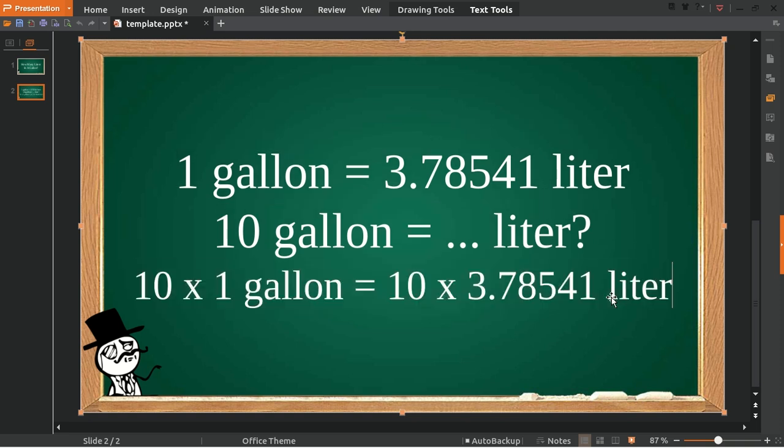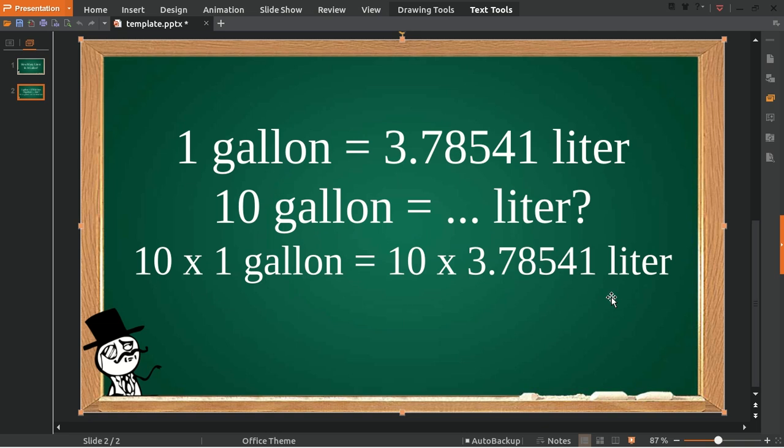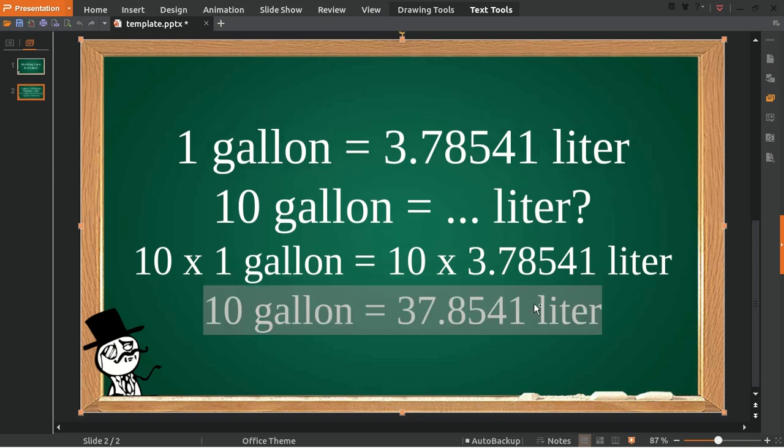So 10 multiplied with one is equal to 10 gallons. Then 10 multiplied by 3.78541 is equal to 37.8541 liters. Well, that solves the question.